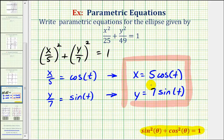While I mentioned we could have let x divided by 5 equals sine t and y divided by 7 equal cosine t, the curve would still be the same, but it would have a different orientation if we graphed the parametric equations. So I do want to do a quick comparison on the two different sets of parametric equations.